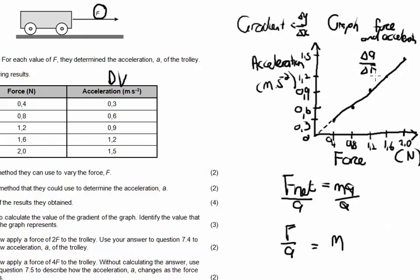Now if you look at the gradient that I calculated here, it's a over f, not f over a. Which means that what I've actually calculated is, if you remember, this is actually m over 1. So if I want a over f, it's actually 1 over m. So the gradient of this graph is going to be equal to 1 over the mass. Just keep that in mind.